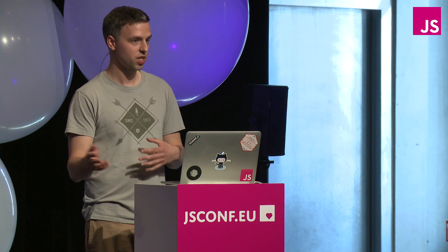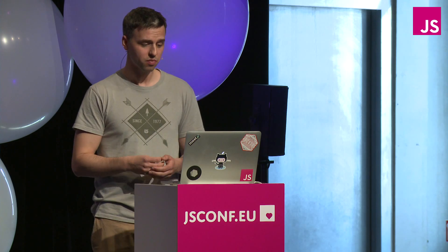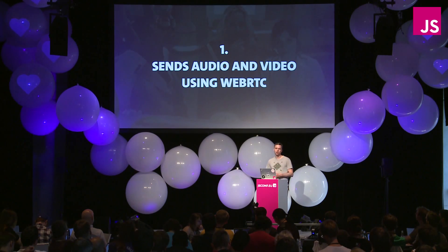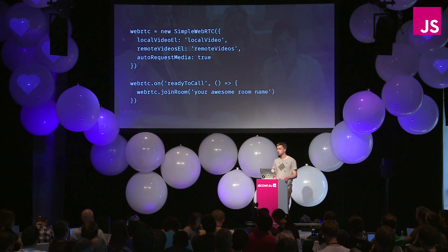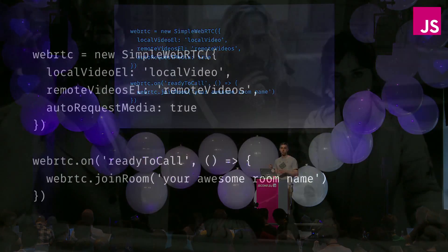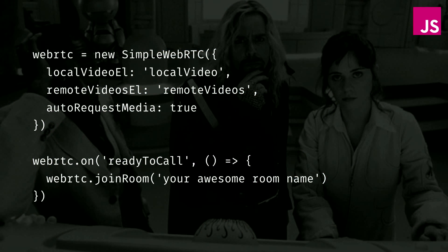Hopefully you're all wondering how it works. I'll go over it step by step — warning, there will be some code ahead, but not much. The first thing is obviously sending audio and video, and it's done via WebRTC. WebRTC is unfortunately not the simplest API, so I'm using a library called SimpleWebRTC to make it much easier. Using it looks like this — less than 10 lines of code, and that's all you need to make a basic Skype or Hangouts application.